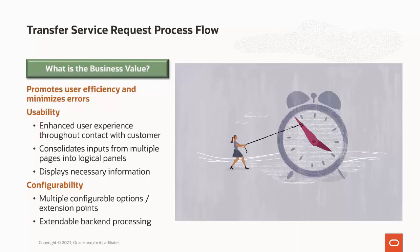Transferring service is one of the key moments in the lifecycle of a utility customer — this is where a customer is moving from one property to another. In this release, we have introduced the Transfer Service Request Process Flow capability. This helps call center agents process transfer service requests efficiently in a consistent manner by guiding them through the common steps and actions for transferring service. There are two main drivers: usability and additional configurability.